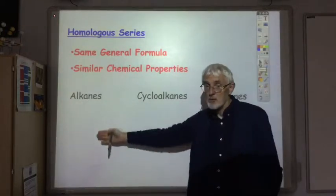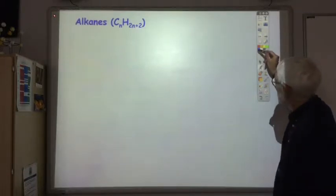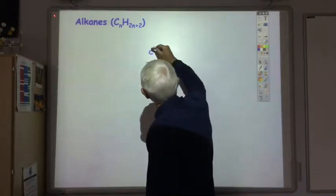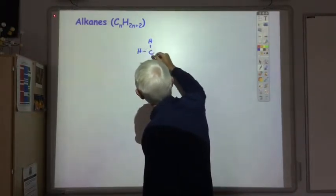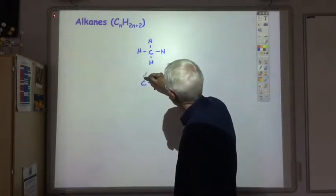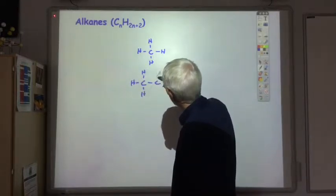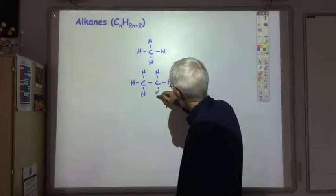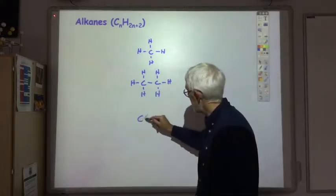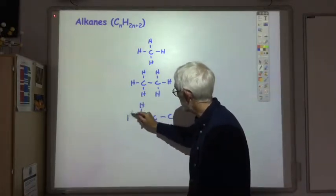Let's start by looking in a bit more detail at the alkanes. The simplest alkane is the one with just one carbon — it's methane. Then the next one has two carbons. When you draw hydrocarbons, every carbon must have four bonds, and that's ethane. Then the next one has got three carbons — that's propane.